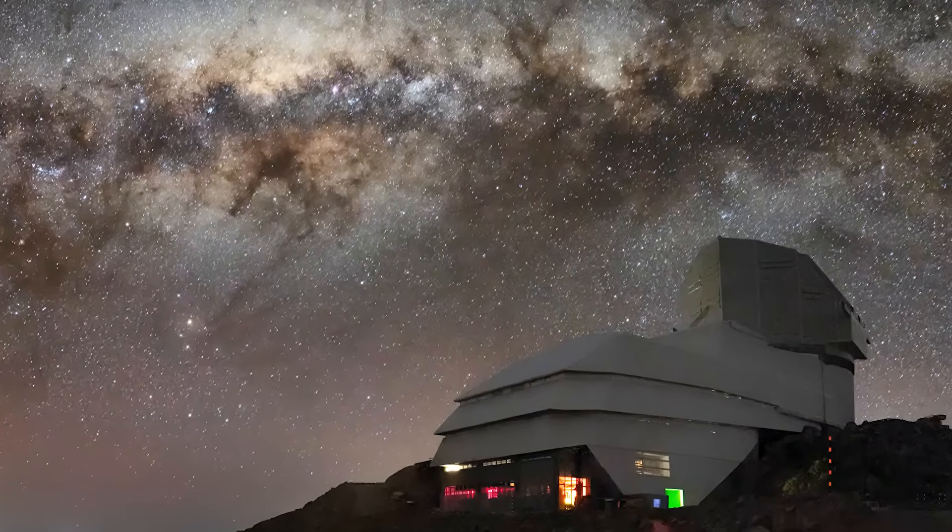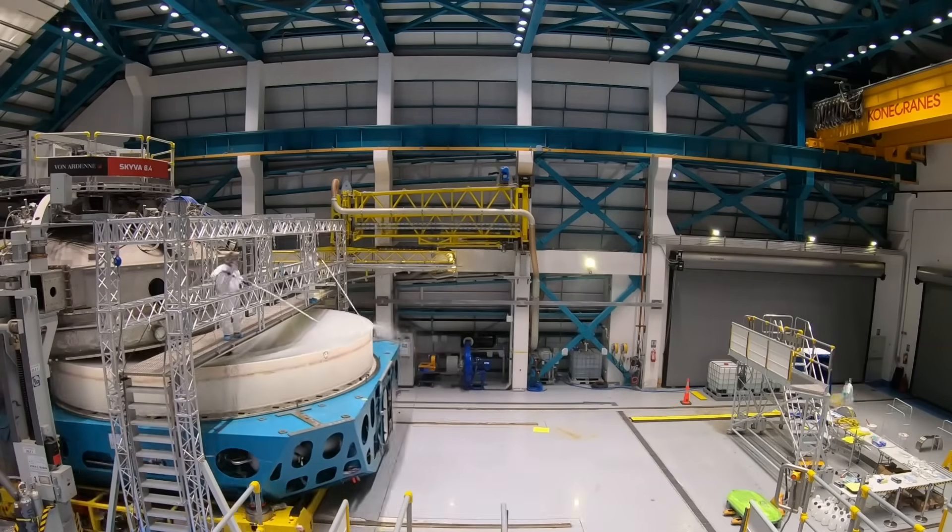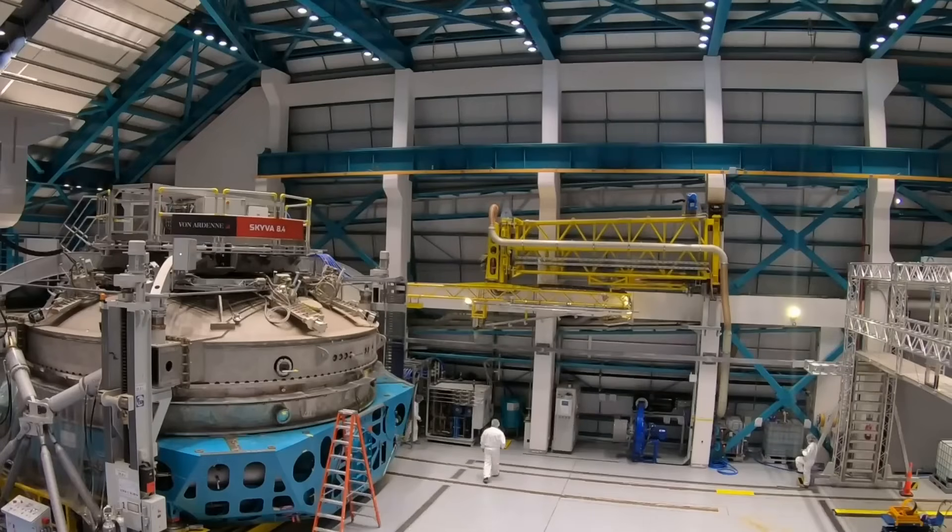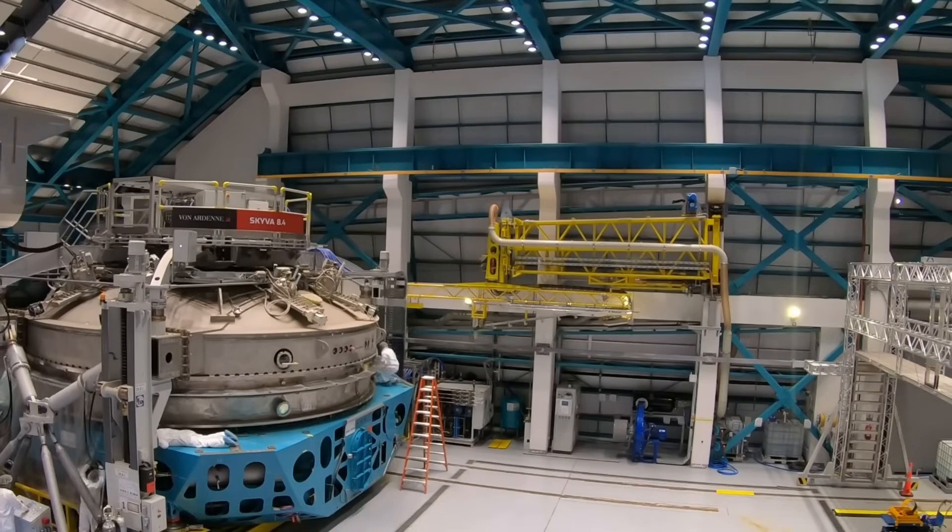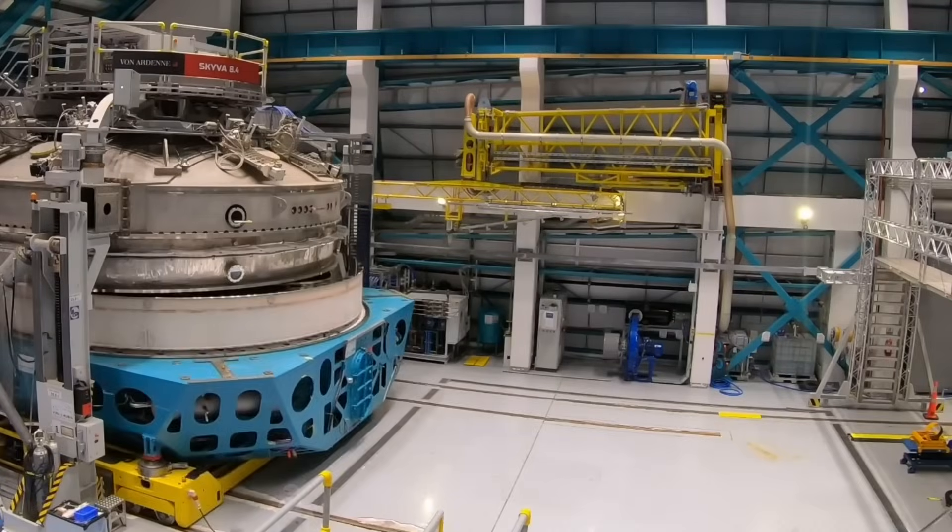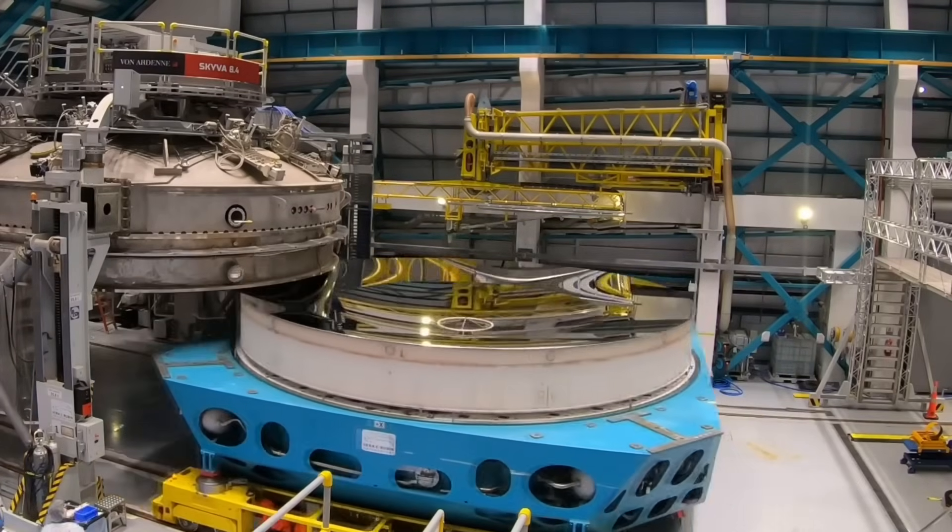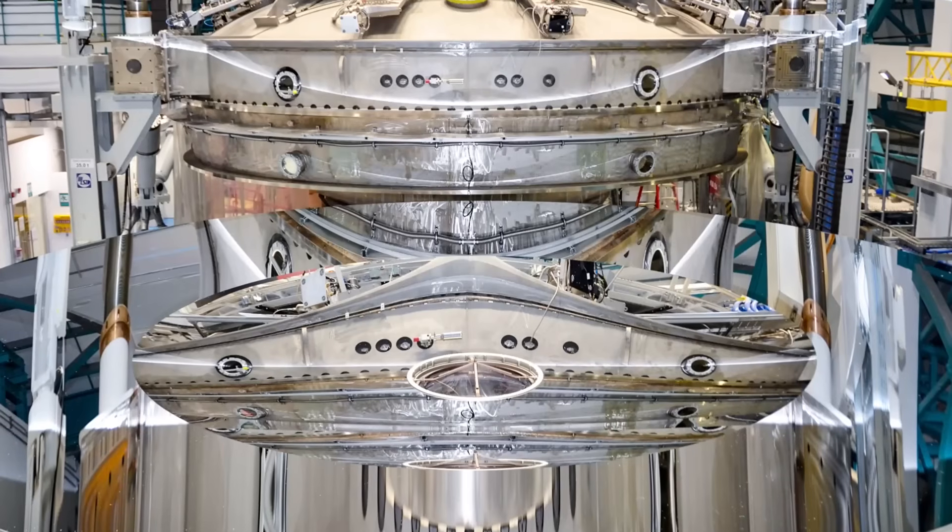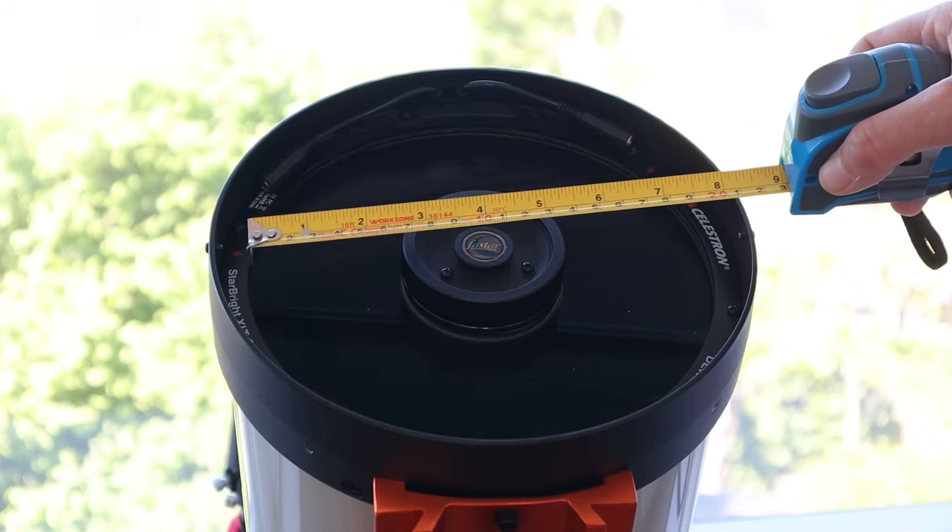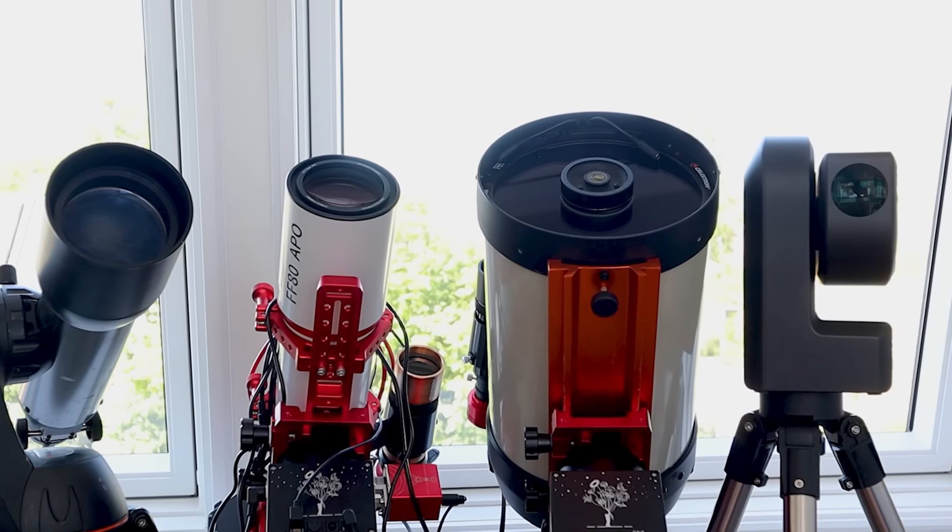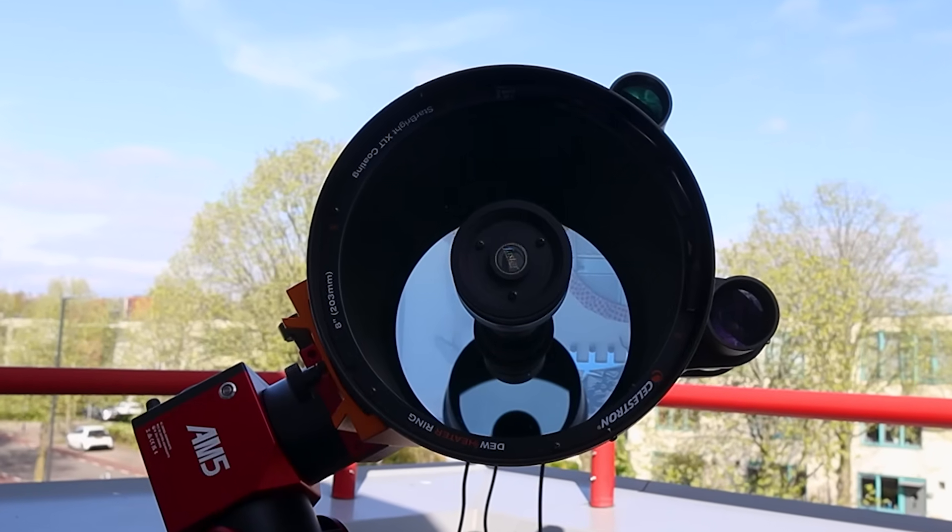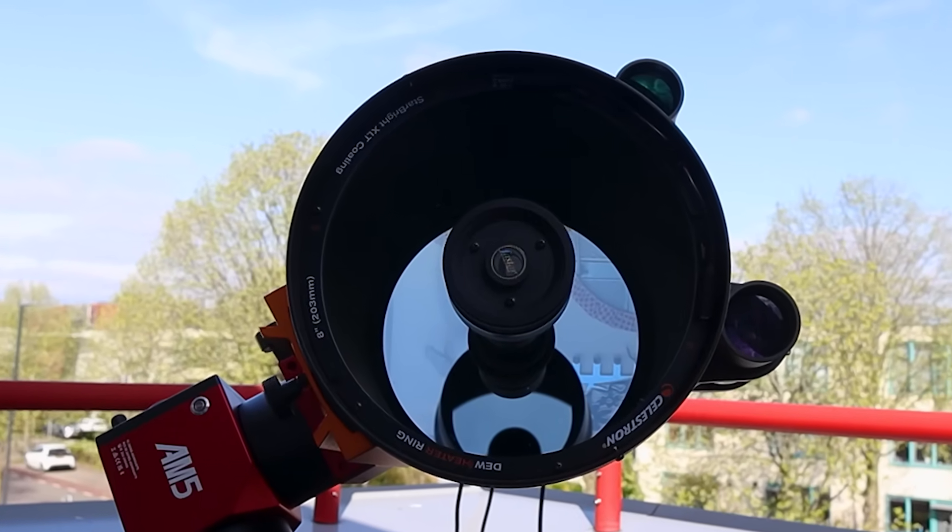So how does Rubin compare to a typical backyard telescope? Let's start with the aperture, the size of the mirror that collects light. Rubin's primary mirror is huge, it's 8.4 meters wide, that's about 8400 millimeters or about 331 inches. Most of us use much smaller telescopes. Amateur scopes usually have apertures between 50 and 350 millimeters, around 2 to 14 inches. A pretty average size would be 200 millimeters or 8 inches, so let's use that as a reference.